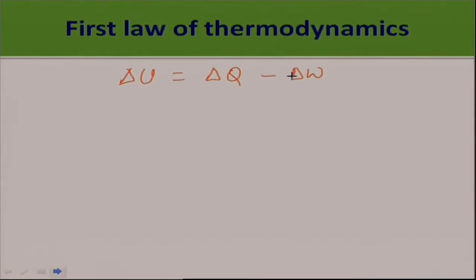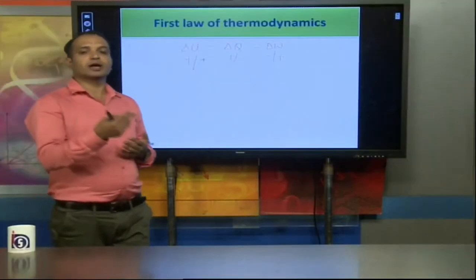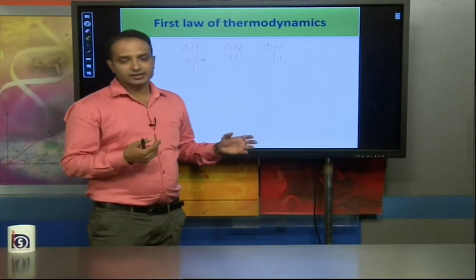When we supply energy to the system and increase its temperature, the value of δQ is positive. If heat is given out, its value can be negative. Work done by the system is negative; work done on the system is positive. If internal energy increases, its value is positive; otherwise negative. Whenever we solve numerical questions, we keep track of the sign convention — whether work is done on the system or by the system.